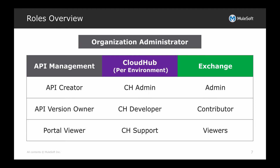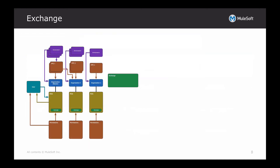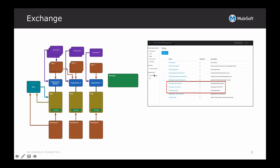Within each role or set of roles, the names pretty much describe what they're for. Users can either be an administrator, a creator, a developer, a contributor, or just a viewer of that specific function of the platform. So API management has a portal viewer, and Exchange has a viewer of those specific assets. Looking at the Exchange roles specifically, out of the box you have Exchange administrator, Exchange contributor, and Exchange viewer.